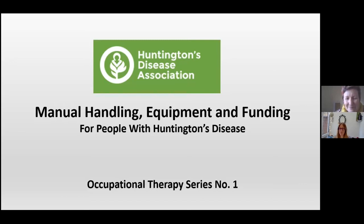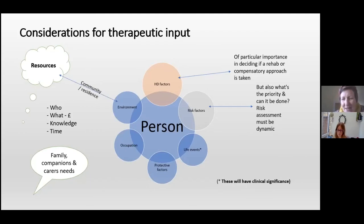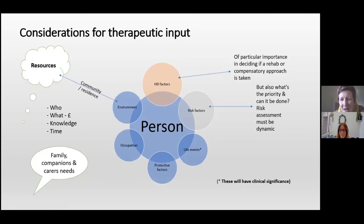Our first question is: what precautionary measures do we need to take when assessing clients with Huntington's disease? This is both a small and a big question. We've titled it 'considerations for therapeutic input' because it sounds like a therapist is asking. Right in the centre is the person with Huntington's disease, and around the edges are the factors that I and my colleagues consider really important.